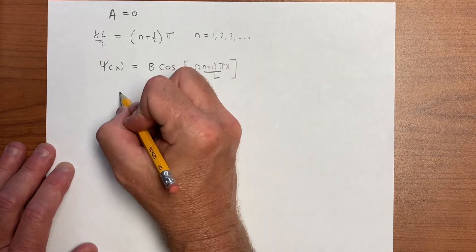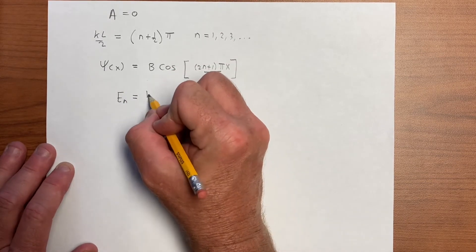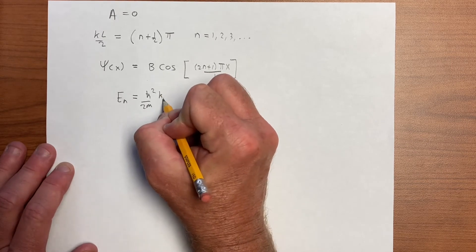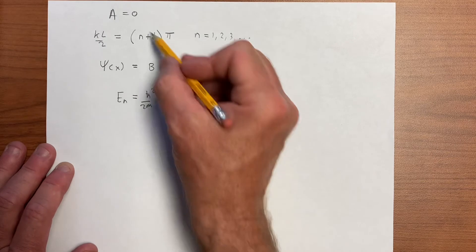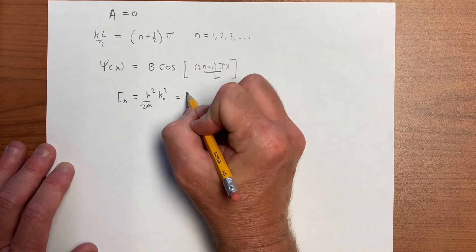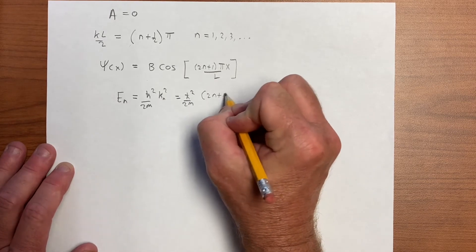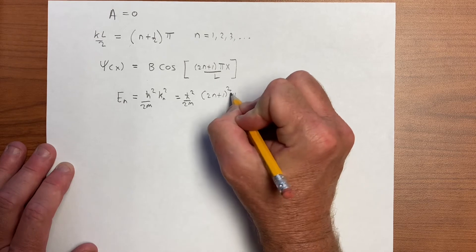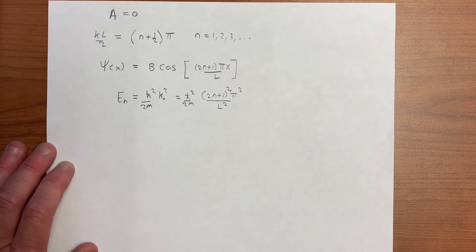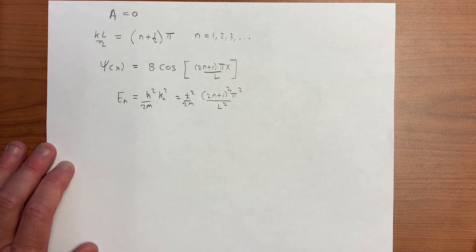And the energy levels from this give us h bar squared over 2m, k n squared, we're getting the k n from this, that gives us h bar squared over 2m times 2n plus 1 squared pi squared over L squared, and these are all of the other energy levels.